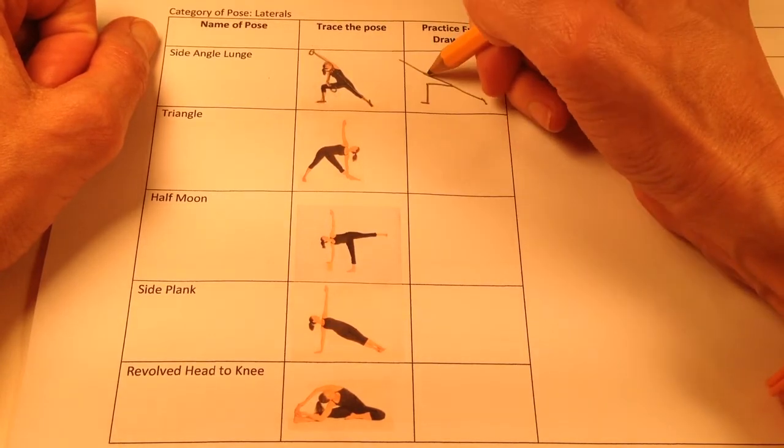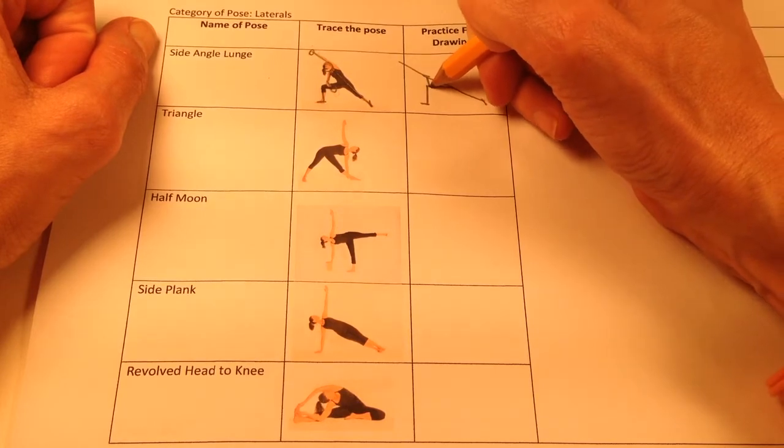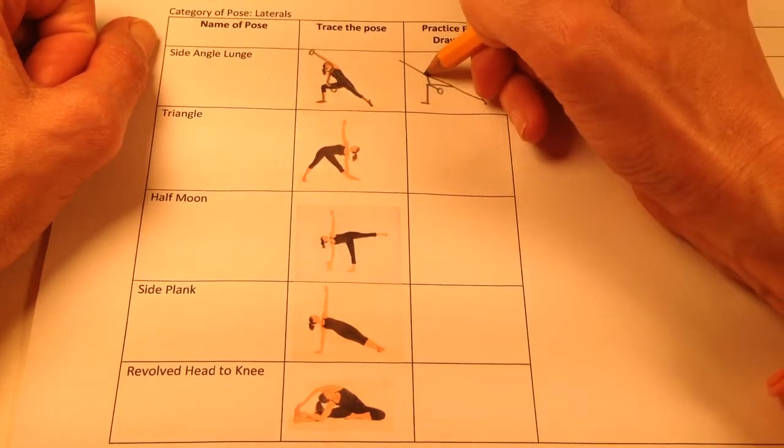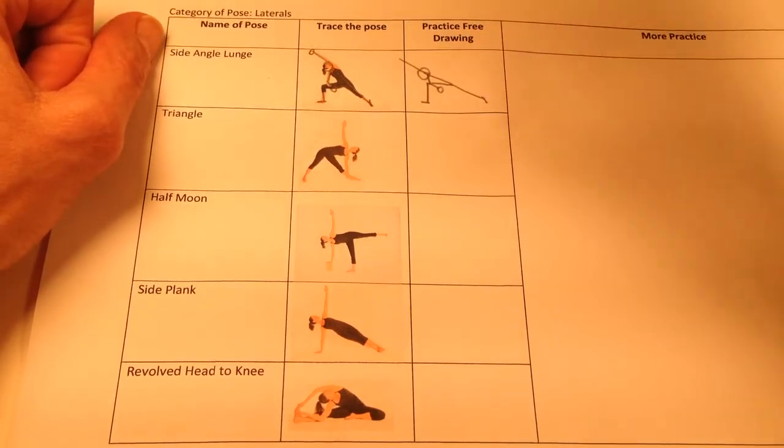The arm is extended overhead in this pose. The upper arm bone rests on the thigh, and then the forearm bone comes out. There's the head. This is not a twist, so we don't put the arrow.